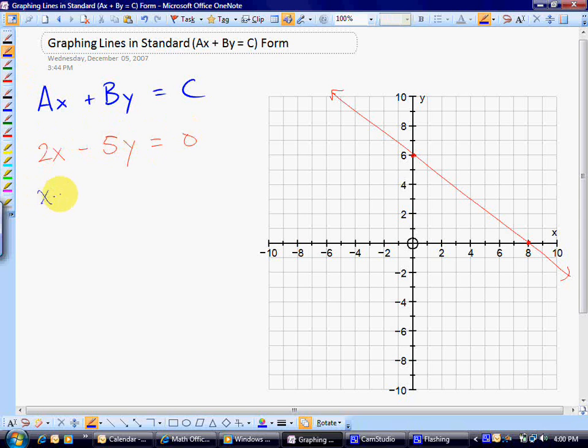However, in this case, when I go to find the x-intercept, c over a, I get 0 over 2, which equals 0. To find the y-intercept, c over b, I get 0 over negative 5, which is also 0.